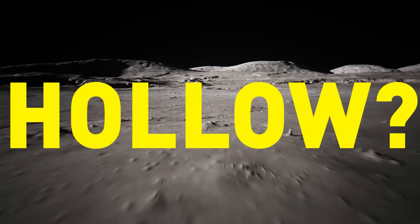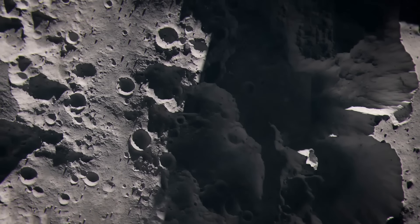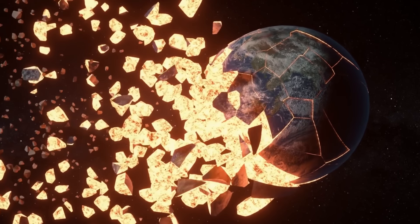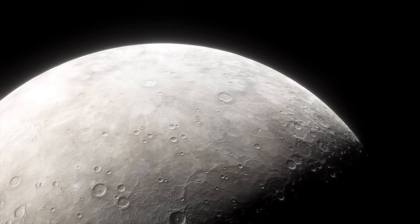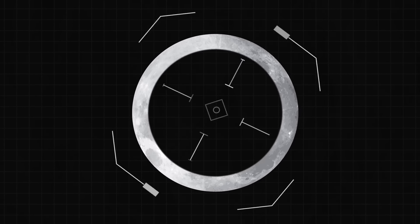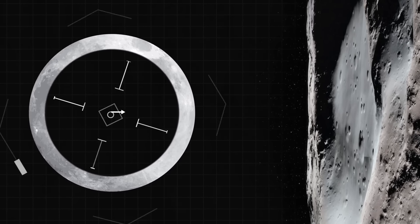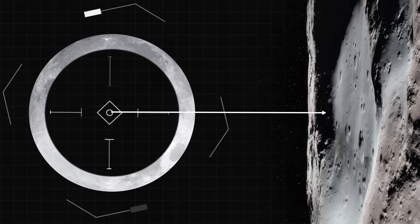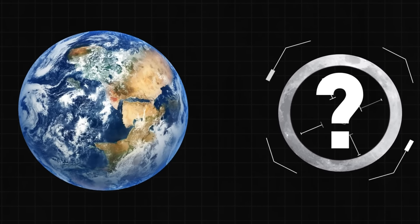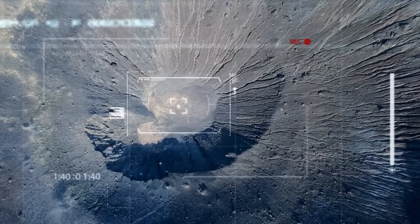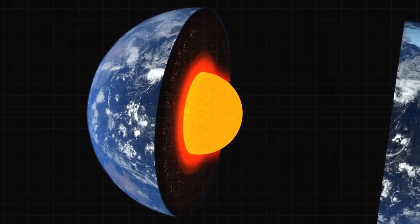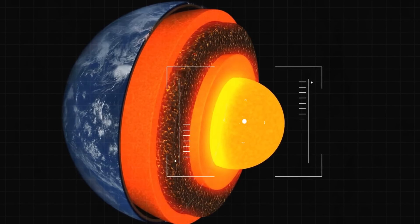What if our moon was hollow? Would we be able to hide inside in case some terrible catastrophe destroyed our home planet? Well, the supporters of the hollow moon theory believe that it's actually a real option. The hollow moon is a hypothesis claiming that Earth's moon is either completely hollow or has quite a lot of space inside. The thing is, the moon is less dense than Earth.